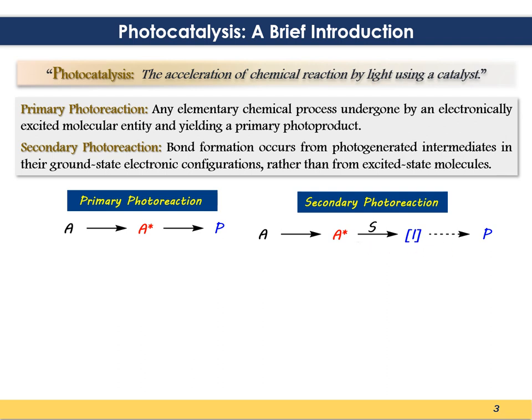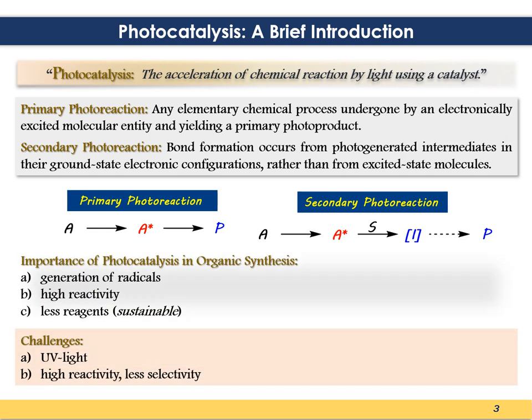Now, if we talk about the benefits of this particular area of research: in the presence of visible light, we can easily perform reactions through the generation of radicals. Because of the high energy of light, it can perform the homolytic cleavage of bonds, which generates radicals. But mainly these are performed with UV light, and thus selectivity becomes a very challenging issue. The most important advantage here is the use of less amount of reagents, which is much more sustainable. We can just generate radicals in the presence of light, so no additional chemical reagents are needed.